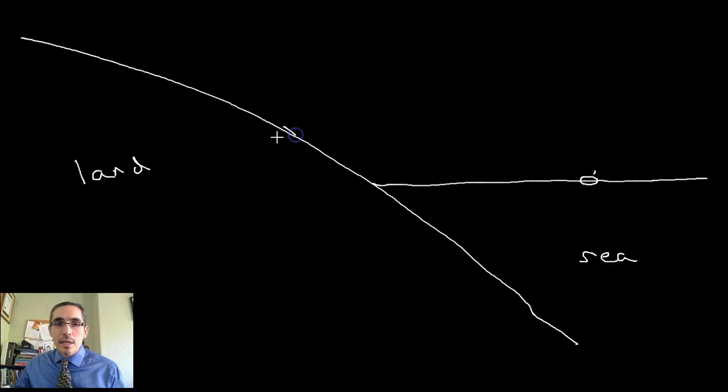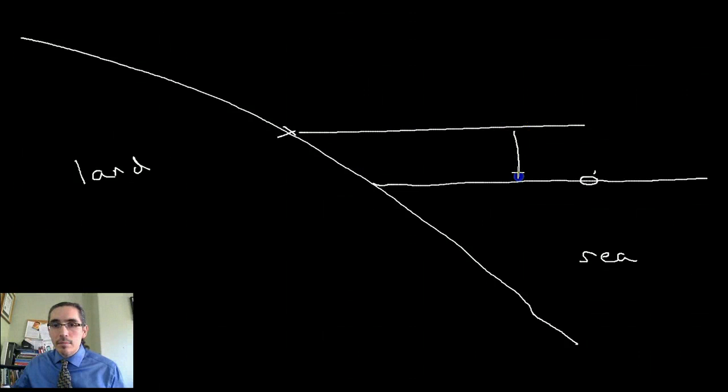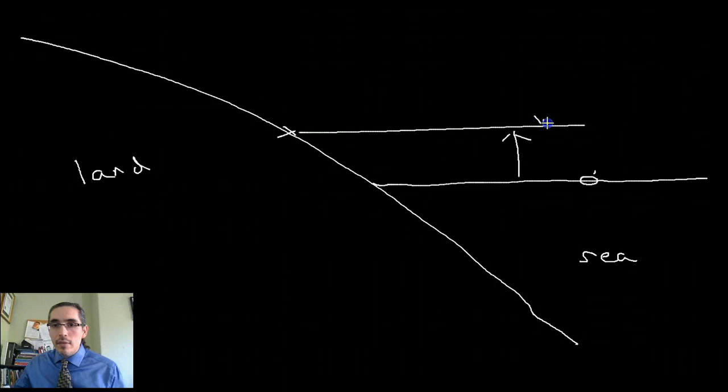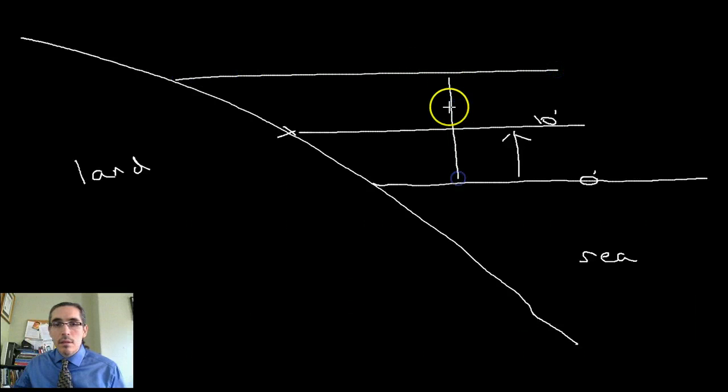If we measure some position on land and we want to know its elevation, we're going to measure it relative to that sea level. Let's say that in this case, the elevation is 10 feet above mean sea level. If we go to a higher elevation, we're measuring again from mean sea level.